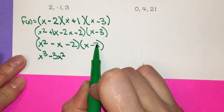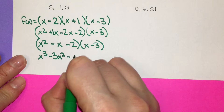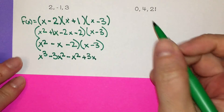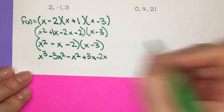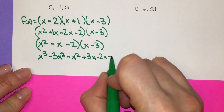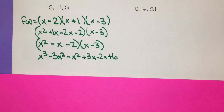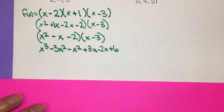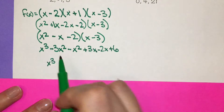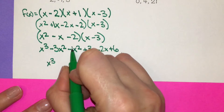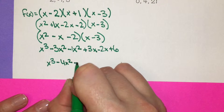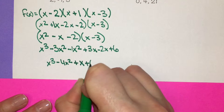Moving on to the next term: negative x times x is negative x squared, negative x times negative 3 is positive 3x. Then negative 2 times x is negative 2x, and negative 2 times negative 3 is positive 6. Combining like terms in descending order: x cubed, negative 3x squared minus x squared is negative 4x squared, 3x minus 2x is x, plus 6.